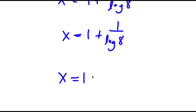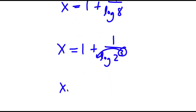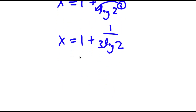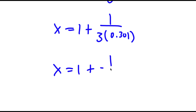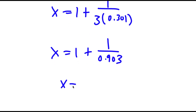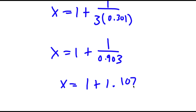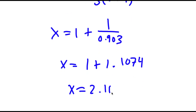Now log 8, I can rewrite as log 2 to the power of 3, and I can move 3 to the front. So now I have x is equal to 1 plus 1 over 3 times log 2. Log 2 is equal to 0.301, so 3 times 0.301 is 0.903, and 1 over 0.903 is approximately 1.107. So x is equal to 1 plus 1.107, which is equal to 2.107.